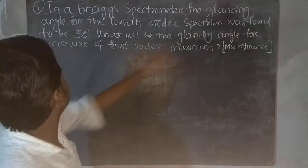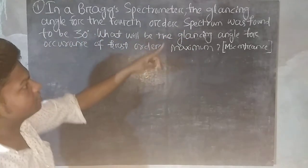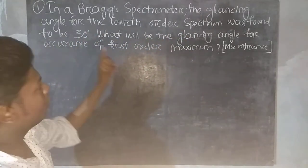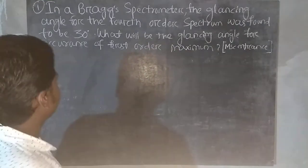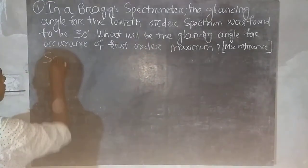In a Bragg spectrometer, the glancing angle for the fourth order spectrum was found to be 30 degrees. What will be the glancing angle for occurrence of first order maximum? So we have to find the solution.